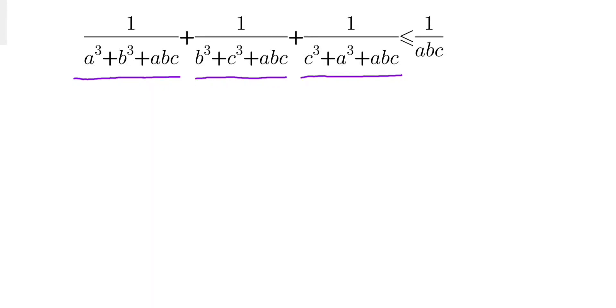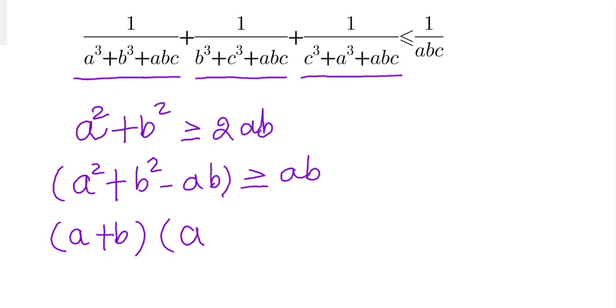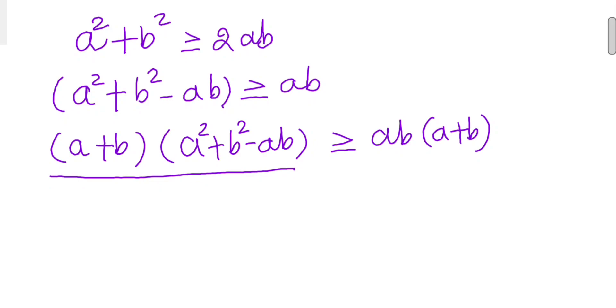We have that a² + b² ≥ 2ab. From here, subtracting ab from both sides gives us a² + b² - ab ≥ ab. Let's multiply (a + b) on both sides, so this is (a + b)(a² + b² - ab) ≥ ab(a + b). Do you notice something here? This is nothing but a³ + b³, which is more than or equals to ab(a + b).